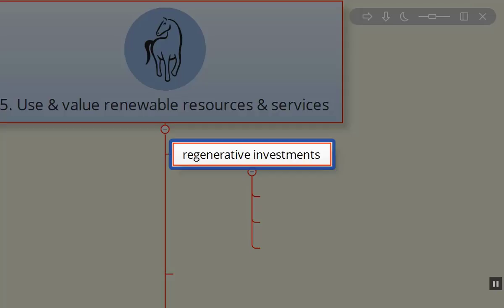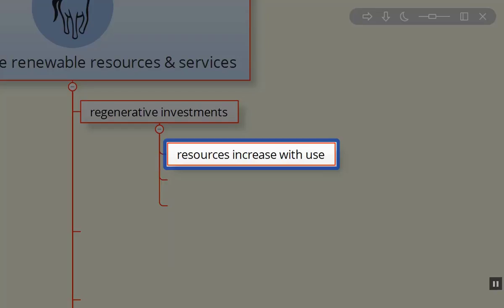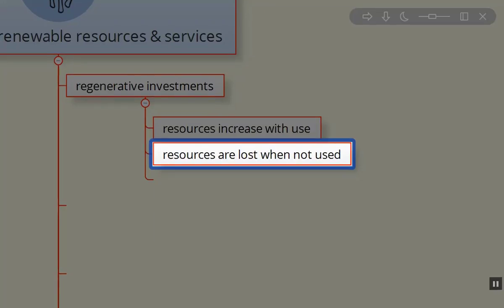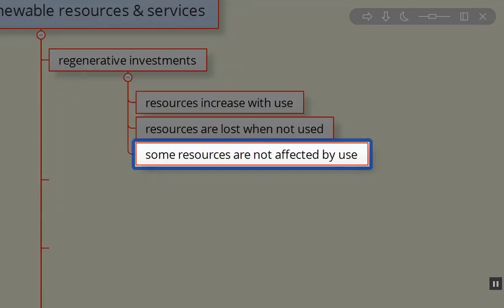So what are some of the regenerative investments? Well, certainly, if we put money, put our time and energies into perennial crops, the resources can increase with use. The resources are lost when not being used. So, you know, the apples from the apple tree, if we don't use them for our pies or for our ciders, well, then they're lost to us. Well, not necessarily. They go into the soil. They can be composted. So it's, again, a way of redirecting these outputs from our systems. Some resources are not even affected if they aren't being utilized.